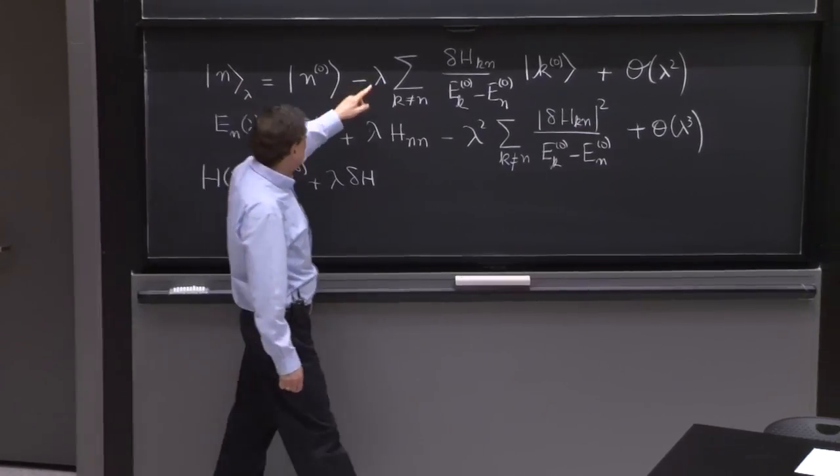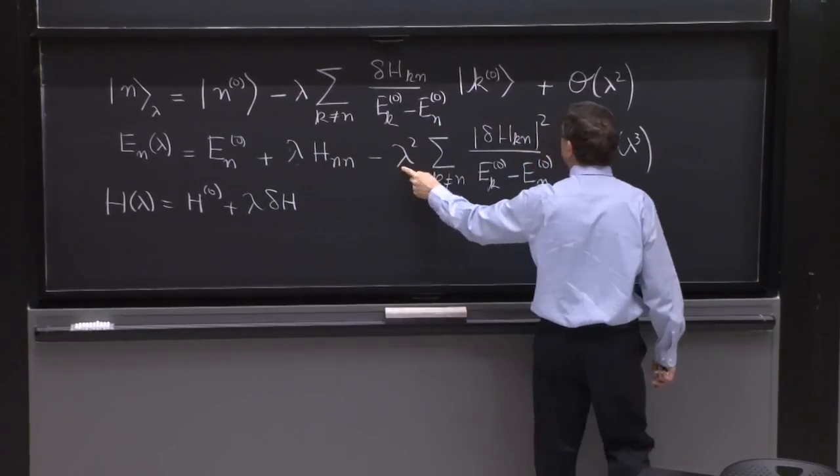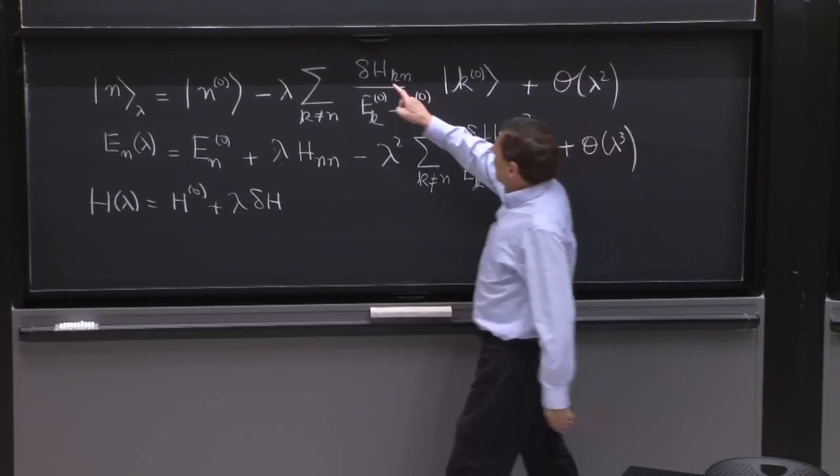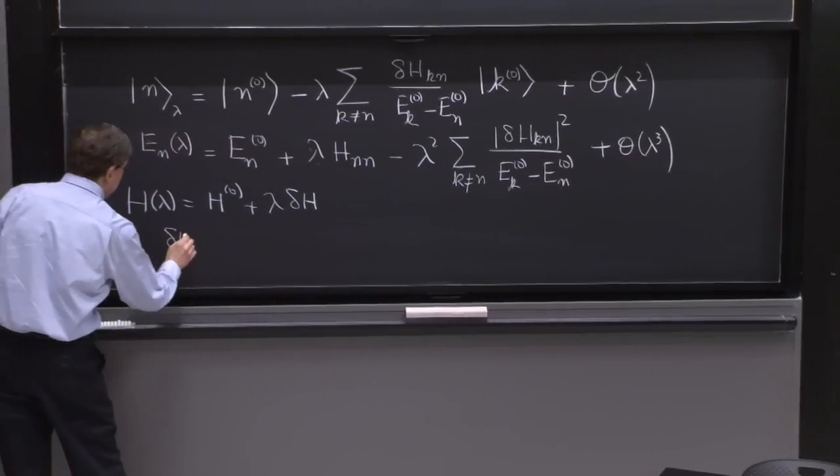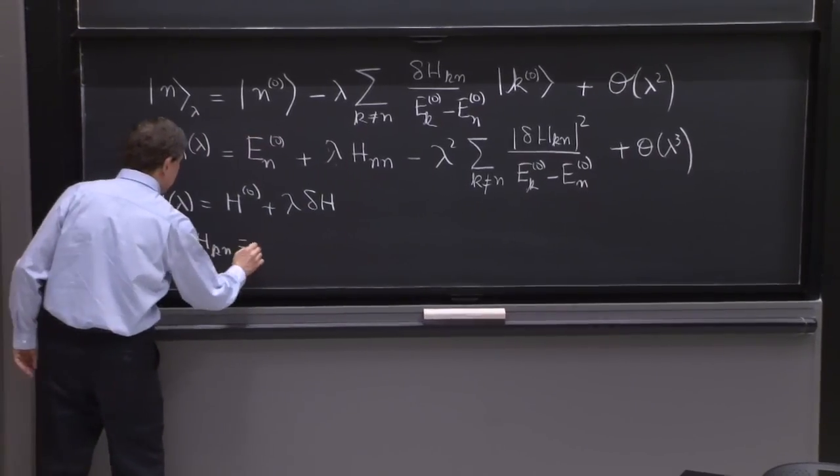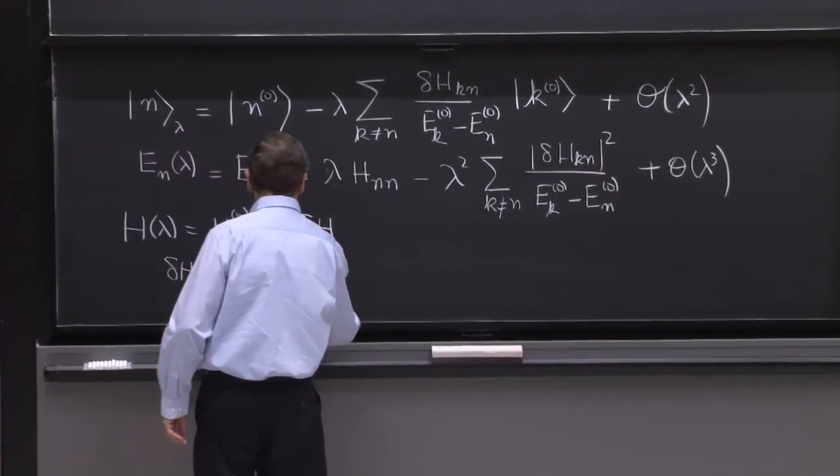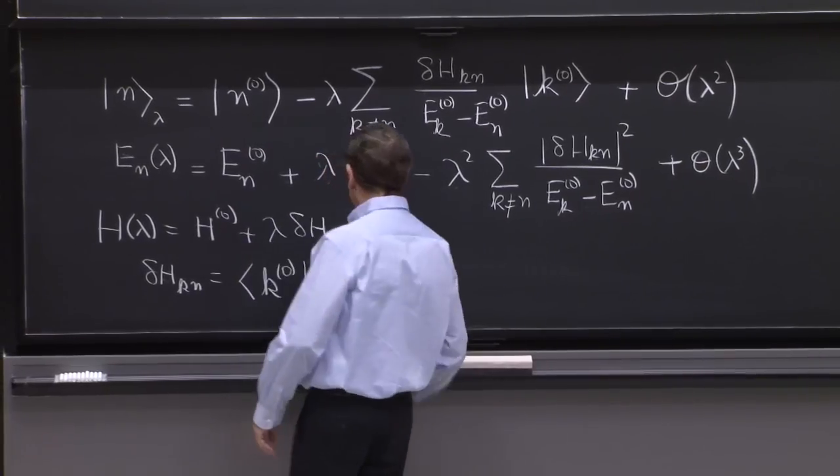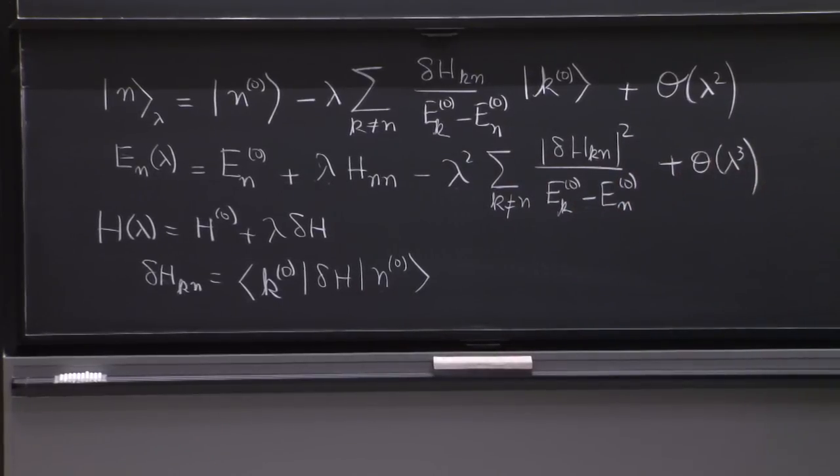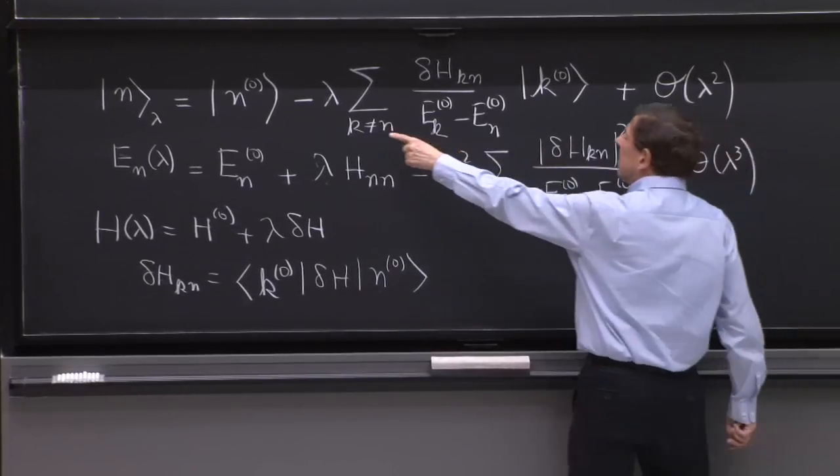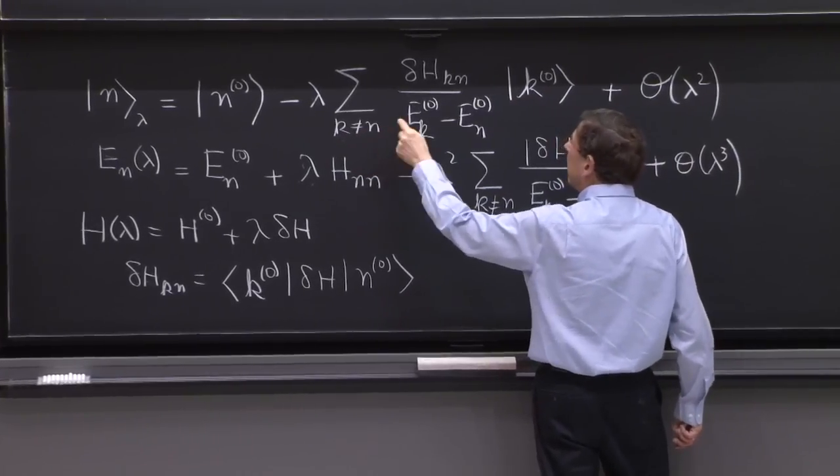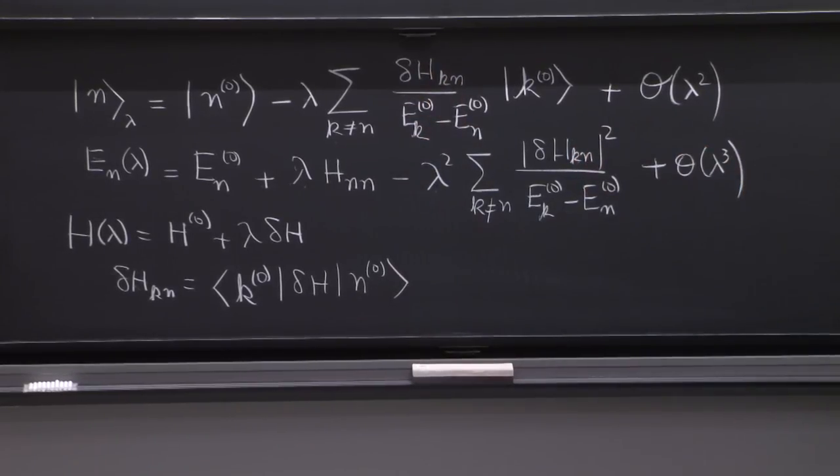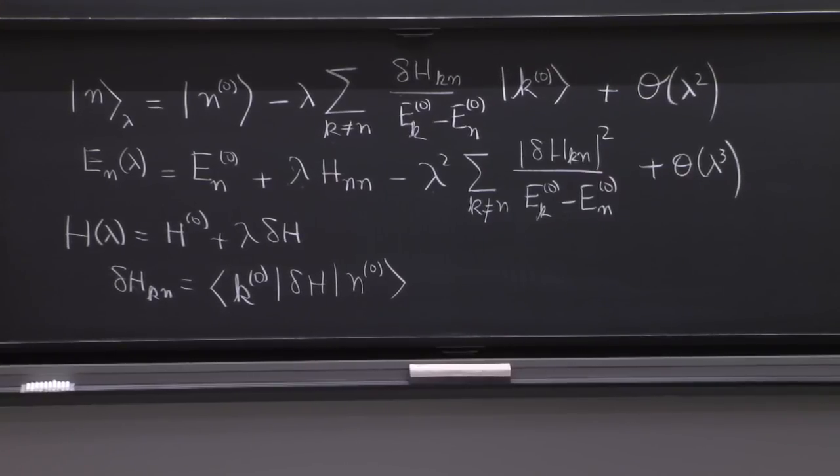And n0 was an eigenstate of h0 with energy en0. And we found that as you turn on lambda, lambda becomes non-zero. The energies change, the eigenstate changes. And here is lambda, first order in lambda, second order in lambda. We didn't compute the state to second order in lambda.